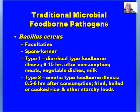Type two of Bacillus cereus is the emetic type, where vomiting is one of the major symptoms. It occurs very rapidly after consumption of fried, broiled, or cooked rice and other starchy foods. Some of the major outbreaks of B. cereus have been associated with cooked rice.